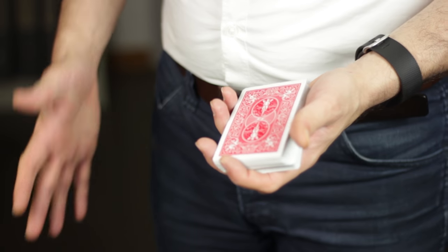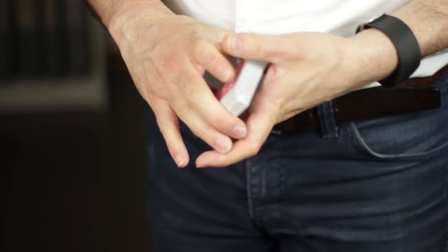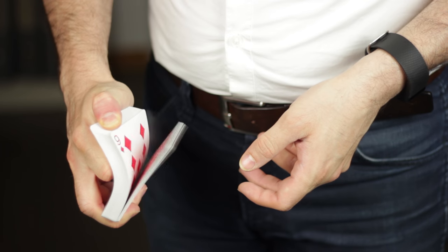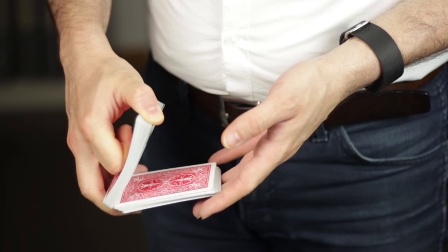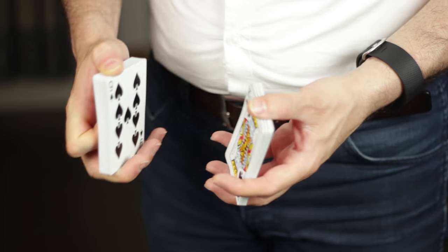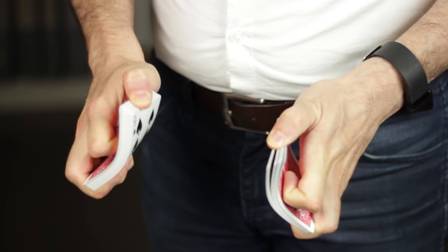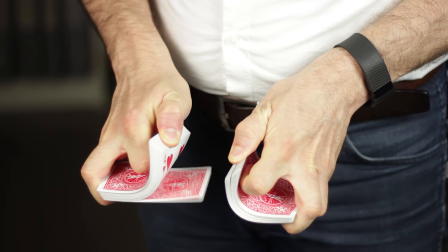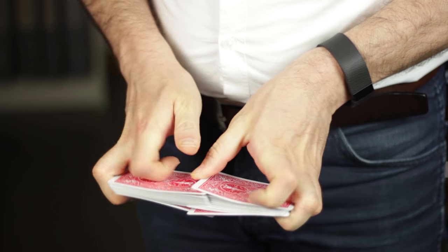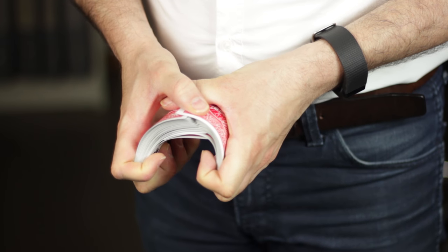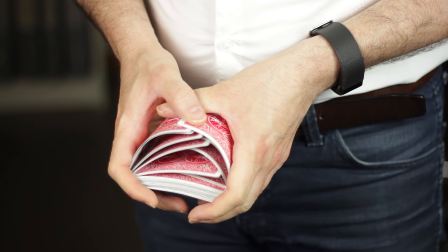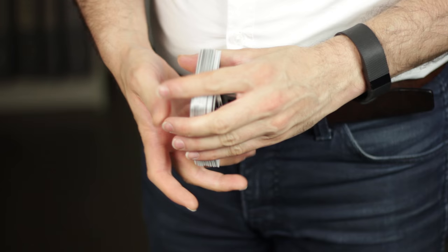The in-the-hand riffle shuffle consists of four major steps. The first one is riffling the cards. The second one is flipping the cards over, the left one. The third one is riffling them together. And the fourth one is creating the bridge and then square the cards. Just like that.